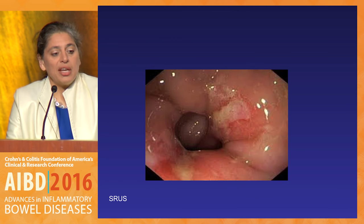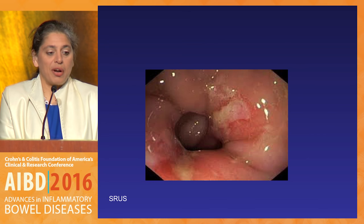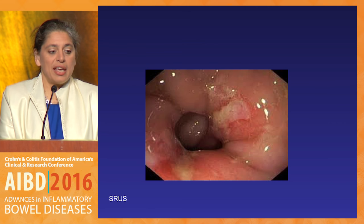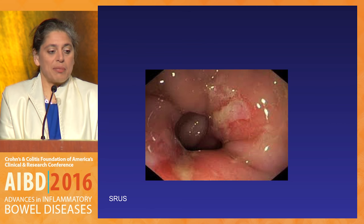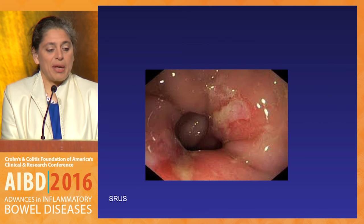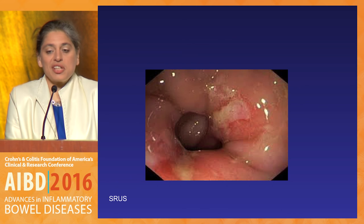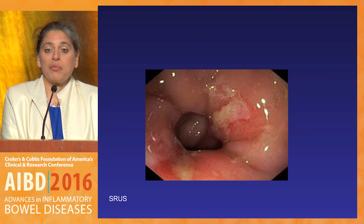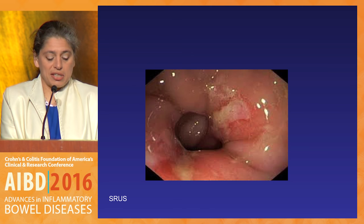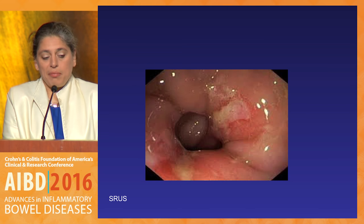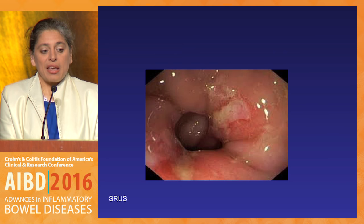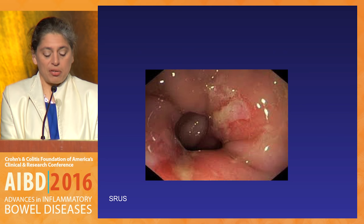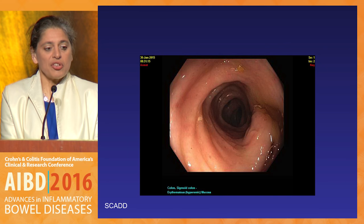Here is a woman who was sent to me with refractory proctitis. We did our flex sig and here's what we saw endoscopically. This is solitary rectal ulcer syndrome — the history she gave was that she had spent a lifetime of straining and was constipated. Again, a good history and the proper biopsy done with a pathologist who can tell you this is not chronic inflammatory bowel disease.